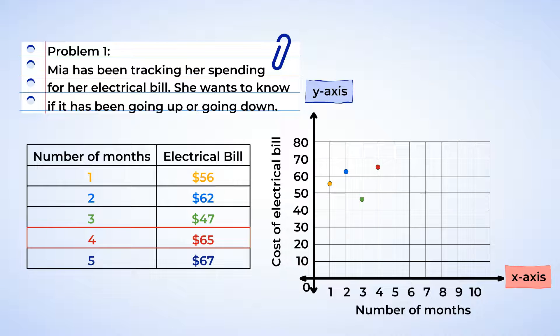And last point, month five, $67. So we can place that just below $70. And now you can even connect the dots with a line to see the trend.